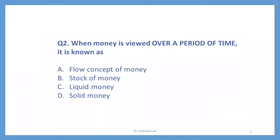Question number 2. When money is viewed over a period of time, it is known as. This question is also related to the first question — it is asking about money supply not at a particular point of time, but over a period of time. Over a period of time, it is known as flow concept, because money is circulating from one hand to another hand in a given period of time. So the right answer is flow concept — option number A.